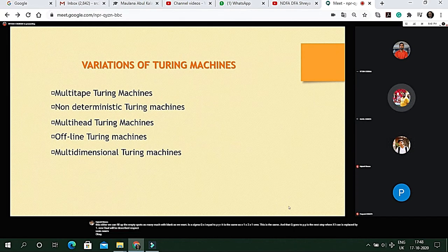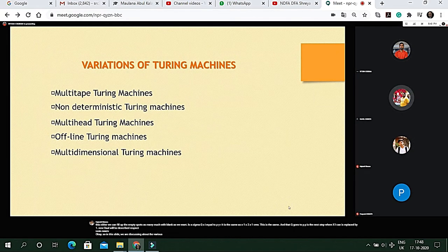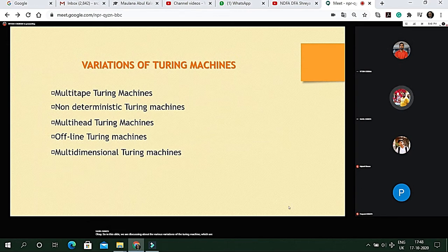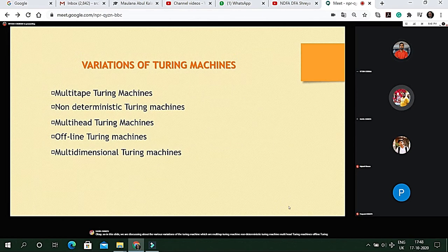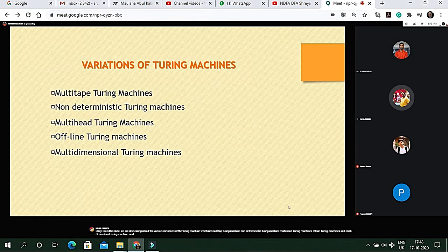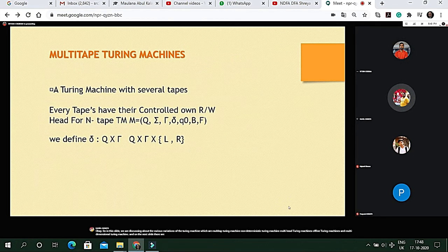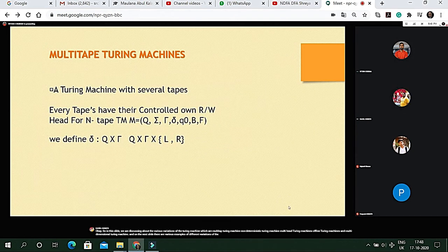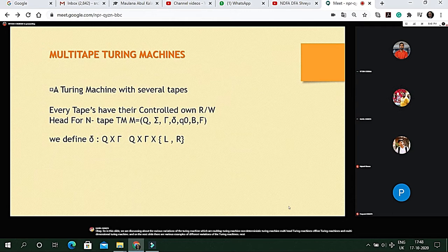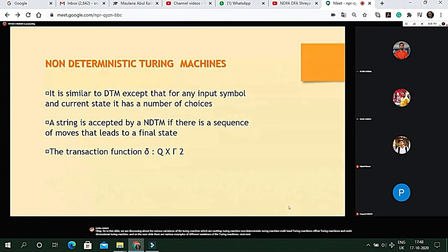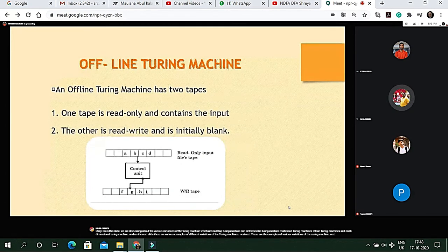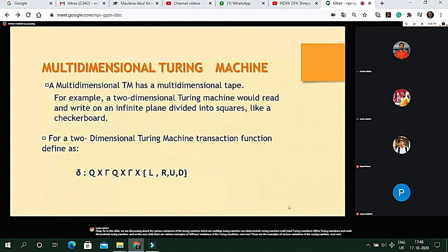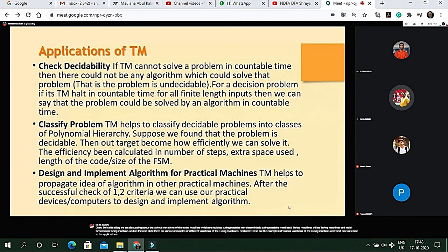In this slide we are discussing about the various variations of the Turing machine which are multi-tape Turing machine, non-deterministic Turing machine, multi-head Turing machine, offline Turing machines and multi-dimensional Turing machine. And on the next slide there are various examples of different variations of the Turing machines. These are the examples of various variations of the Turing machine.